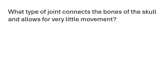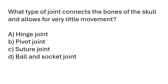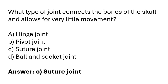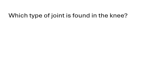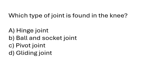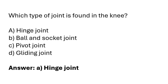Which type of joint connects the bones of the skull and allows for very little movement? The correct answer is option C: the suture joint connects the bones of the skull and allows for very little movement. Which type of joint is found in the knee? The correct answer is option A: the hinge joint is the type of joint found in the knee.